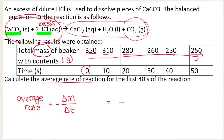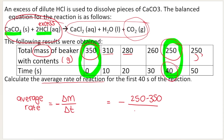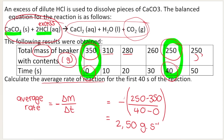Because we are dealing with mass, the formula is: rate = −(Δm/Δt). For the first 40 seconds, the final mass is 250 g and the initial mass is 350 g. Final time is 40 s and initial time is 0 s. So rate = −(250 − 350) / (40 − 0) = −(−100)/40 = 2.50 g·s⁻¹. The negative in front of the fraction cancelled the negative that arose from the numerator. The unit is grams per second because we're dealing with mass in grams and time in seconds.